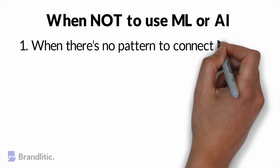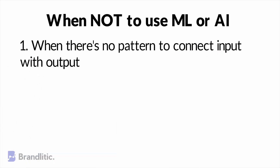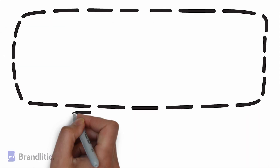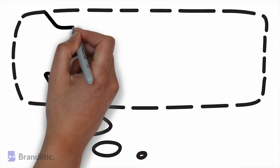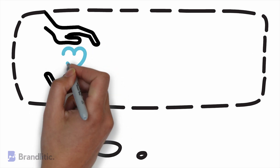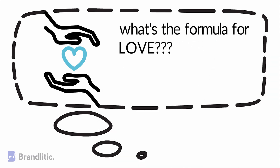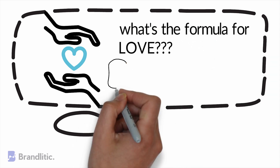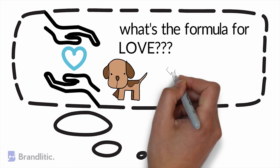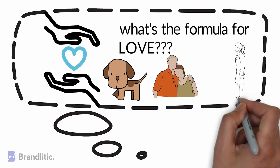1. When there is no pattern to connect input with output. One such example would be to calculate how the human brain develops a feeling called love. You cannot correlate factors and tell a machine why humans love their pet, or siblings, or someone they just met at the workplace.